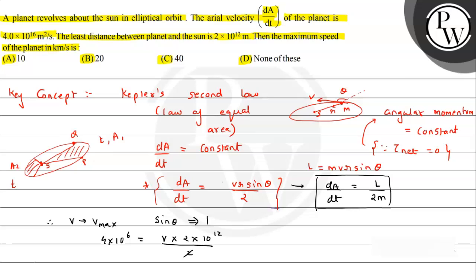So we can find the value of v_max. Using v_max = 2(dA/dt) / r_min = 2 × 4×10¹⁶ / 2×10¹² = 4×10⁴ m/s, which is 40 km/s. So this matches option C. I hope you understood the solution — all the best.